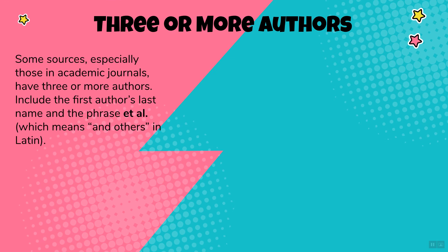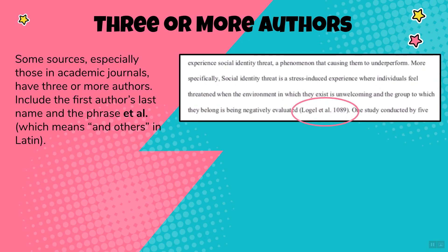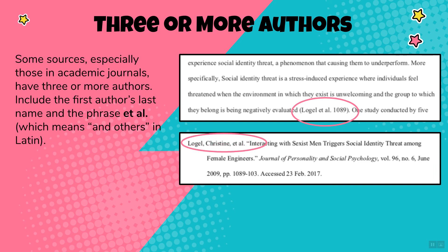When you have three or more authors — especially common in academic journal sources — listing all authors becomes too much for the reader, and usually the first author is the lead author. In this case, include the first author's last name followed by 'et al.,' which means 'and others' in Latin. For example, the parenthetical citation reads 'Logal et al.' with a page number, and the Works Cited entry reads 'Logal, Christine, et al.' Notice the formatting: there are no commas, a period is placed after 'al,' and page numbers are included because the Works Cited entry indicates the source is a PDF.